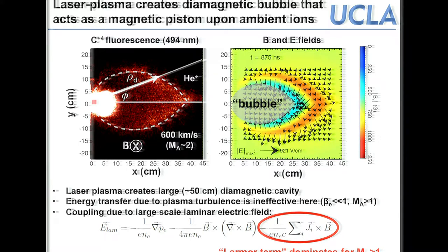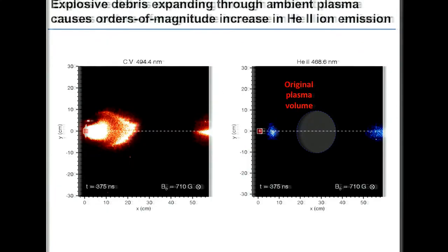The Lorentz term dominates for super-Alfvénic explosions and points downward in this picture: the ion current J points to the right, the magnetic field goes into the page, so the force points down. The electric field arrows show a strong radial field that slows down the debris from this term, but in the magnetic pulse region everything points downward.